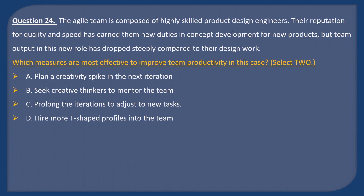Question 24. The Agile team is composed of highly skilled product design engineers. Their reputation for quality and speed has earned them new duties in concept development for new products, but team output in this new role has dropped steeply compared to their design work. Which measures are most effective to improve team productivity in this case? Select two. A: Plan a creativity spike in the next iteration. B: Seek creative thinkers to mentor the team. C: Prolong the iterations to adjust to new tasks. D: Hire more T-shaped profiles into the team.